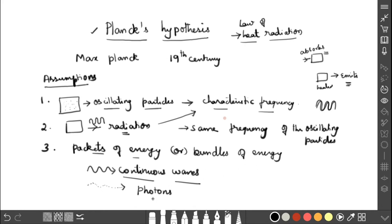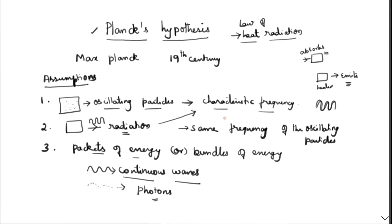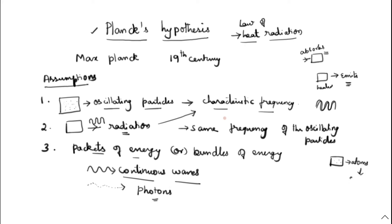What is meant by photons? For example, any material consists of atoms. If you divide the material further, you get subatomic particles — electrons, protons, neutrons. That is for matter. Similarly, for radiation — that is, for light — if you divide light into the smallest unit, you get photons. So a photon is a packet of energy. The energy radiated comes in the form of packets of energy, or bundles, instead of continuous waves.